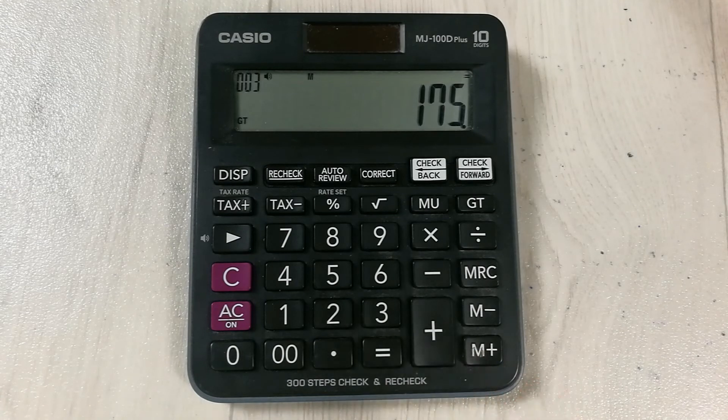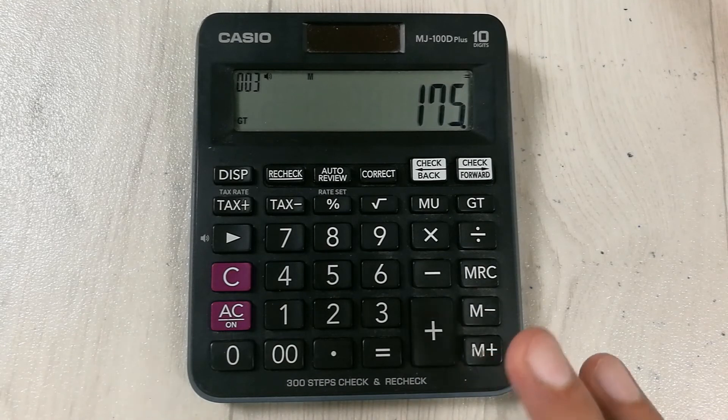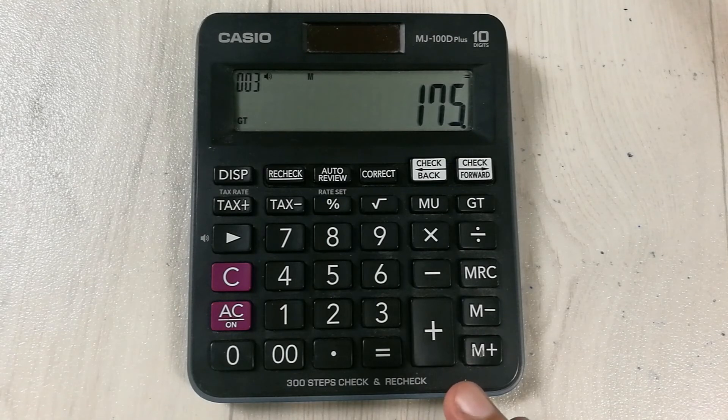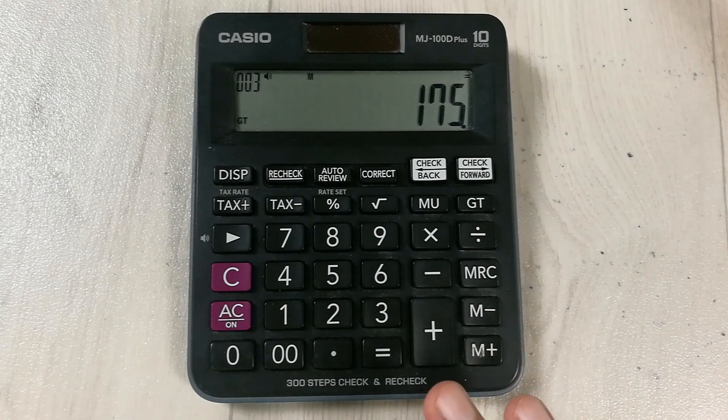Average selling price or ASP is very important in retail math. You have to remember this formula for ASP or average selling price: it is equal to net sale divided by number of items sold.